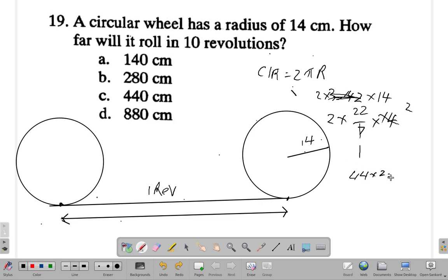Good, it would have rolled around 88 centimeters in one revolution. And then for 10 revolutions, it would be 88 times 10, which is 880 centimeters. So our answer is D. Is that what you got?